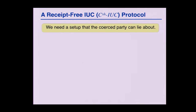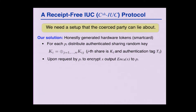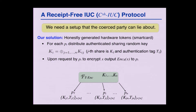This example exactly demonstrates the power of having informants that help the coercer. It also shows what we need: a setup that parties can lie about — something they can commit to from the beginning and then stick with. Our solution uses something that has also been used in actual implementations of electronic voting: randomly generated hardware tokens. The token has internally stored a key for every party — n parties, n keys. What it does is compute an authenticated additive secret sharing of each of the keys, and gives to each party his share along with the authentication tag.